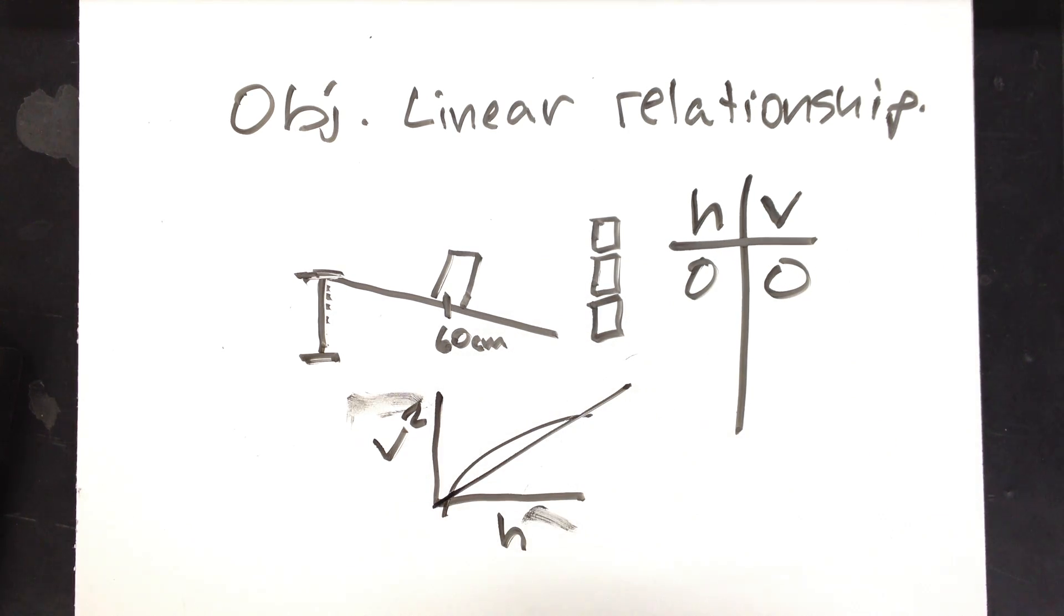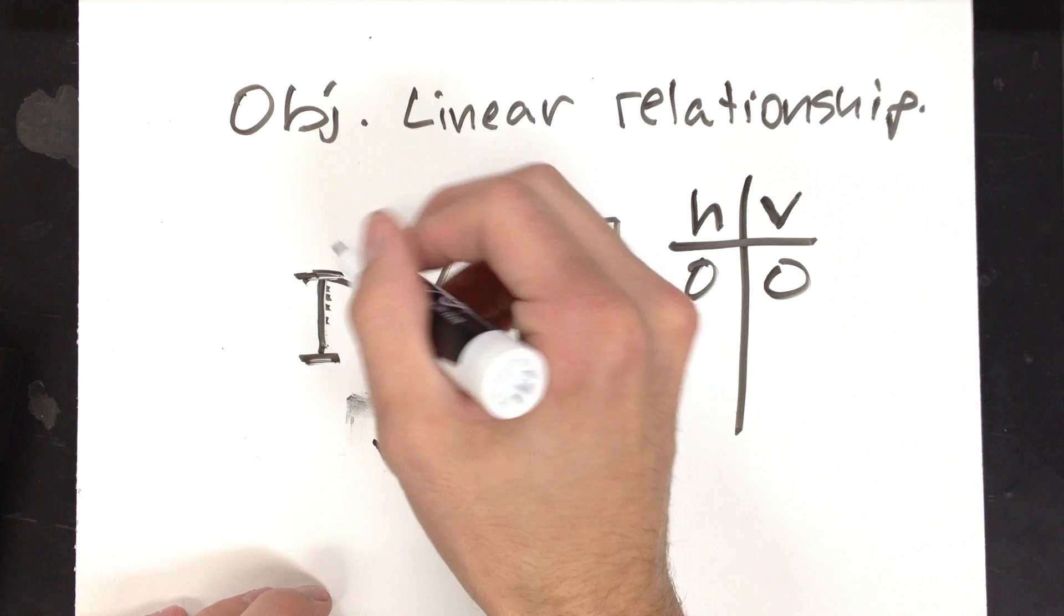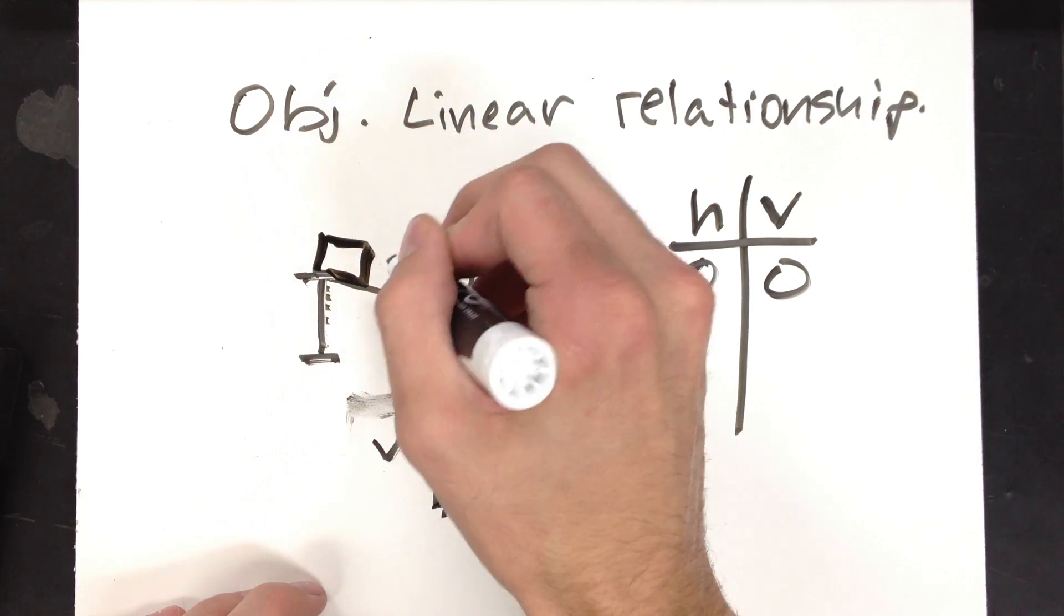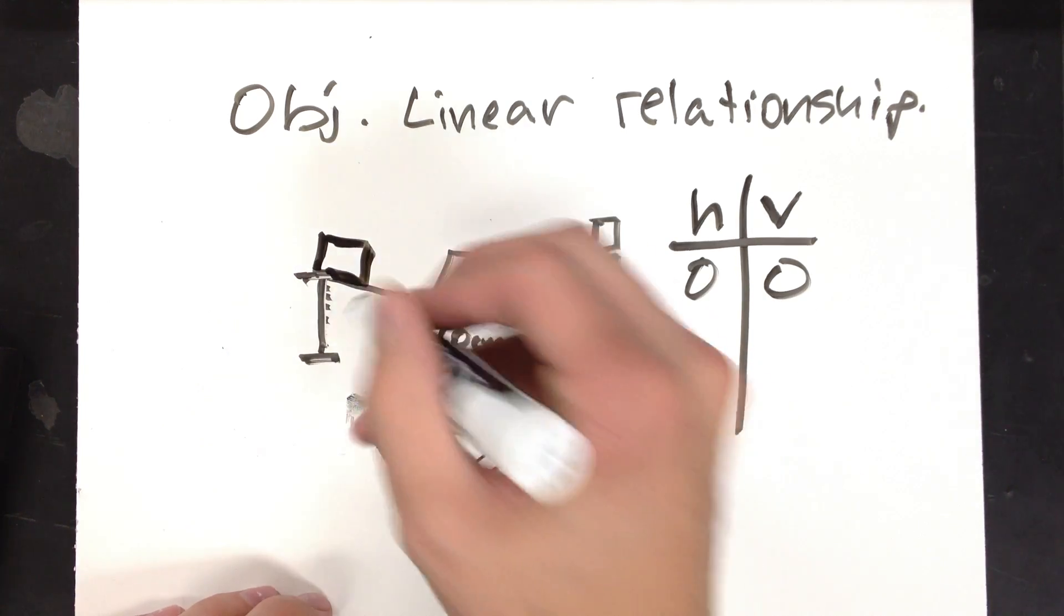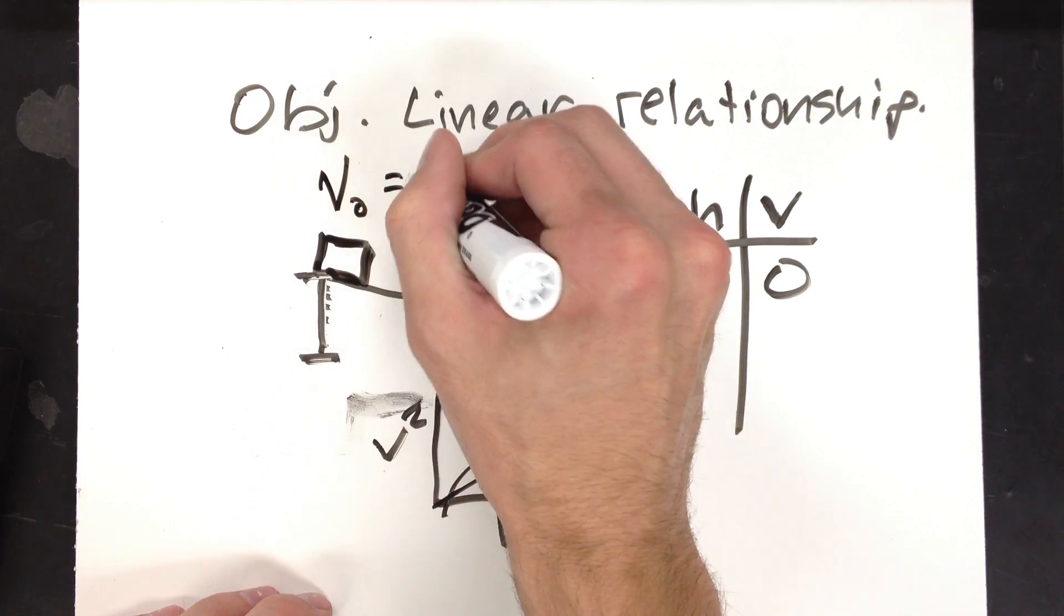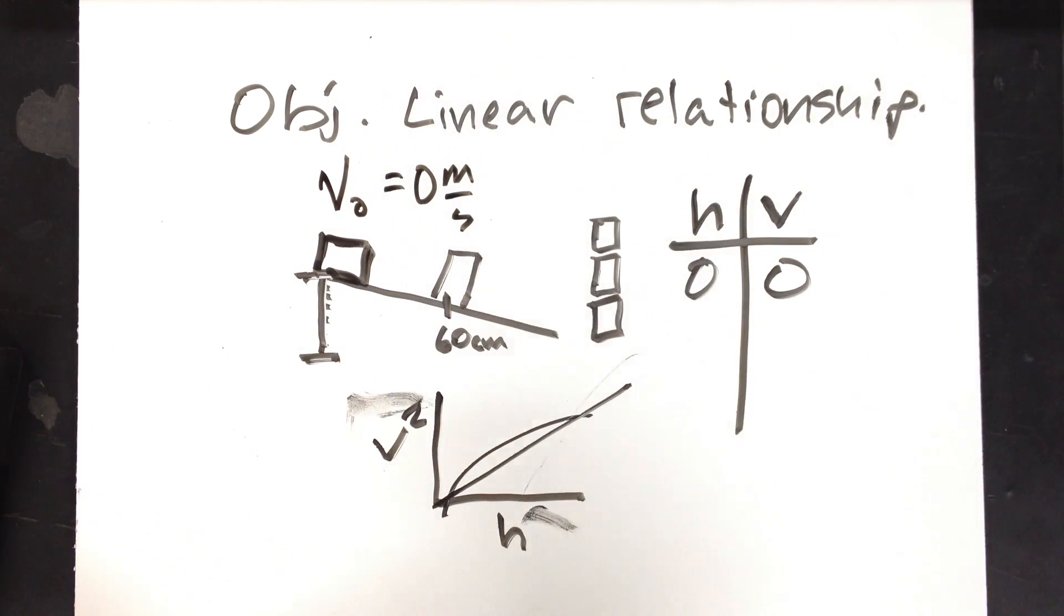That's your objective for the next lab. To come up with a linear relationship between velocity and height. Very important. You always want to release the cart from the same position and you always want to release it from rest. Your initial velocity should always be zero.